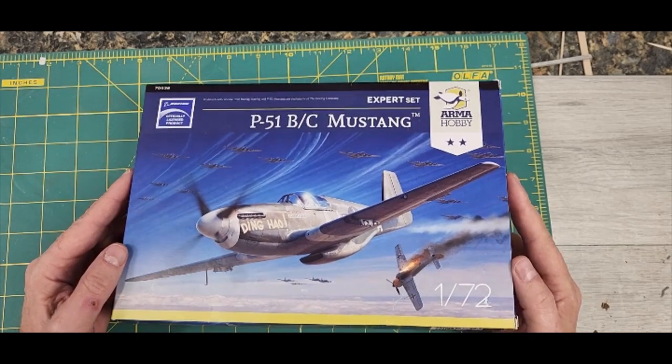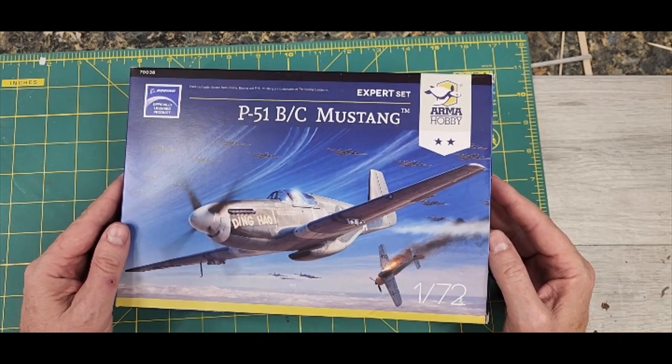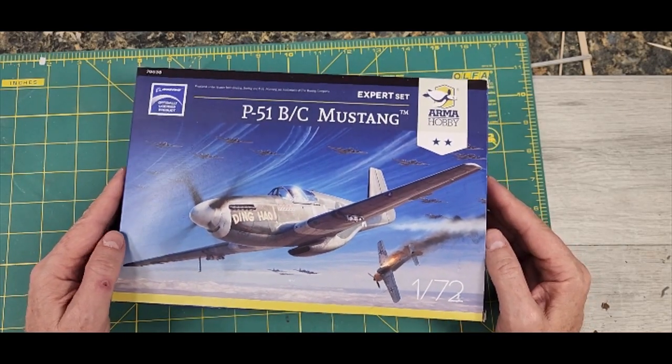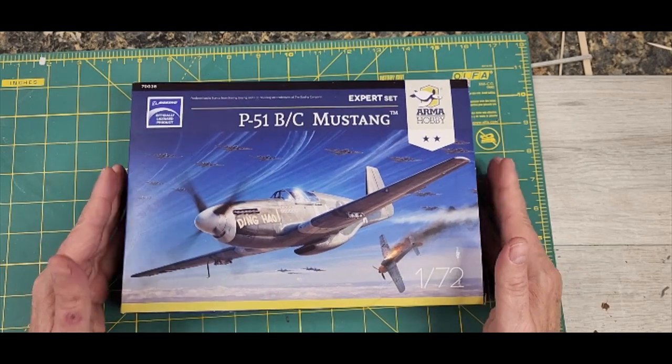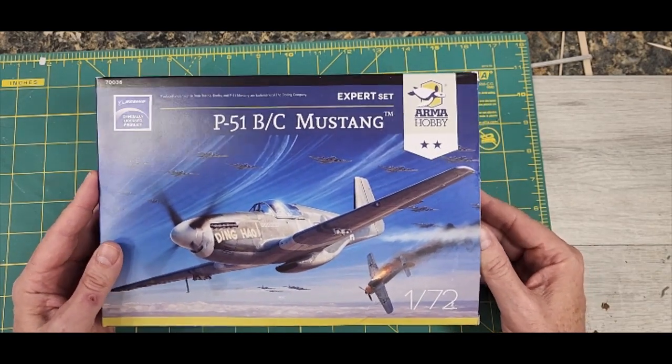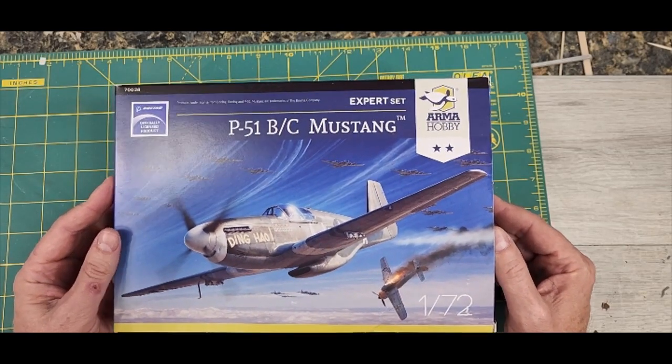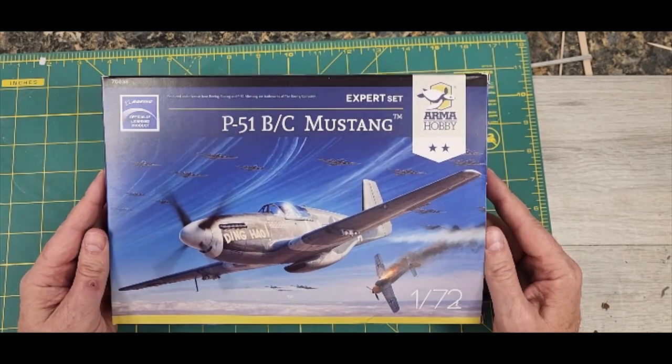This is the Arma Hobby P51B in 1/72 scale. Now I'm not normally a big 1/72 scale guy, but Arma Hobby makes some really good kits. I did a lot of work recently on an Arma Hobby Hawker Hurricane Mark 1 that was re-boxed under Eduard and I posted extensively about that on my modeling page.